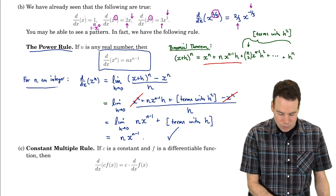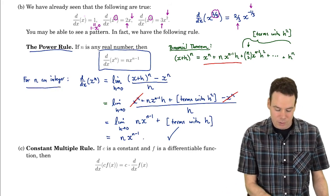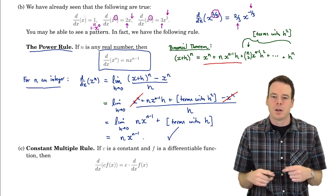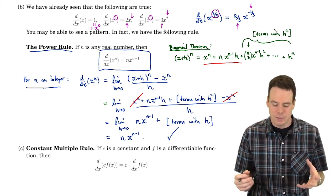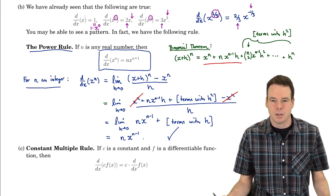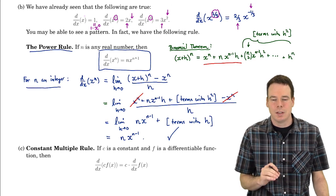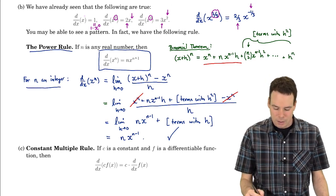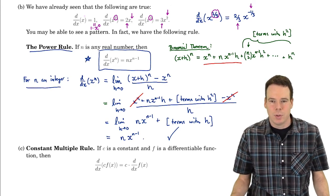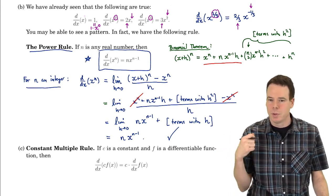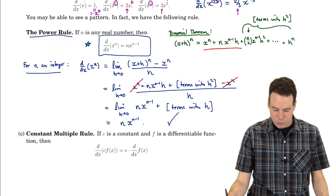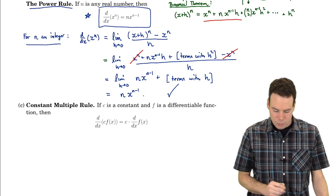We proved the power rule for integer n. For other powers — rational numbers, irrational numbers, any real number — we can use another technique called logarithmic differentiation to show the derivative is still n times x to the n minus 1. We'll get to that in a later section. For right now, we have a nice handy new tool: the derivative of x to the n — just move the exponent down and take one away from it.